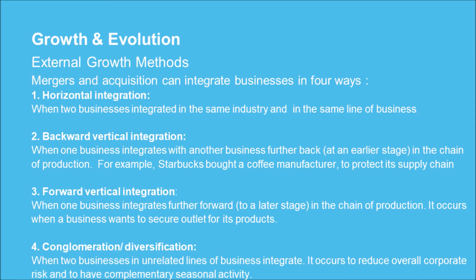Mergers and acquisitions can integrate businesses in four ways: 1) Horizontal integration — when two businesses integrate in the same industry and in the same line of business. 2) Backward vertical integration — when one business integrates with another further back at an earlier stage in the chain of production. 3) Forward vertical integration — when one business integrates further forward to a later stage in the chain of production, occurring when a business wants to secure an outlet for its products.